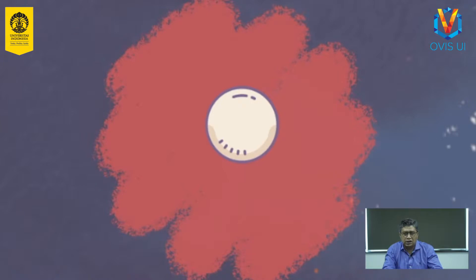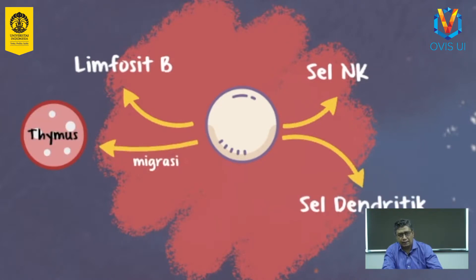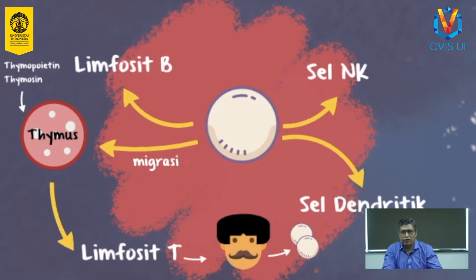Diferensiasi dan proliferasi CLP akan menghasilkan limfosit B, sel natural killer atau NK sel, sel dendritik, dan limfosit T. Limfosit T sebenarnya berasal dari sel common lymphoid progenitor yang bermigrasi ke timus dan mengalami diferensiasi menjadi sel limfosit T karena pengaruh dari hormon timopoietin dan timusin. Pada orang dewasa, diferensiasi sel limfosit T yang baru secara perlahan tidak lagi terjadi di timus, namun proses diferensiasi tetap dipertahankan melalui pembelahan dari limfosit matur yang berada di luar organ limfoid.